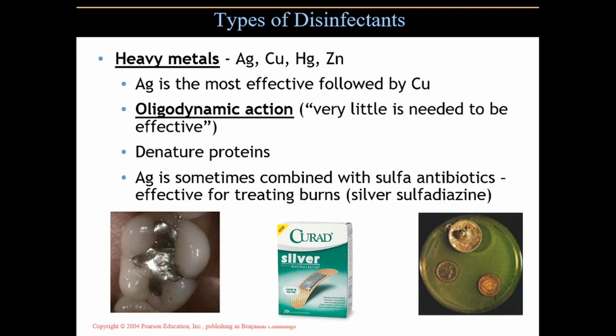We use oligodynamic action in paints — fungicides in paints so we don't get mold and mildew growing on our walls, especially in bathrooms. You can buy clothing with silver infused in them, like socks. You can get socks with silver nanoparticles or silver nanothreads woven into the fabric, and that silver will bond with fungi to reduce athlete's foot, or will prevent stink from bacteria growing in the moist, warm environment of your shoe.